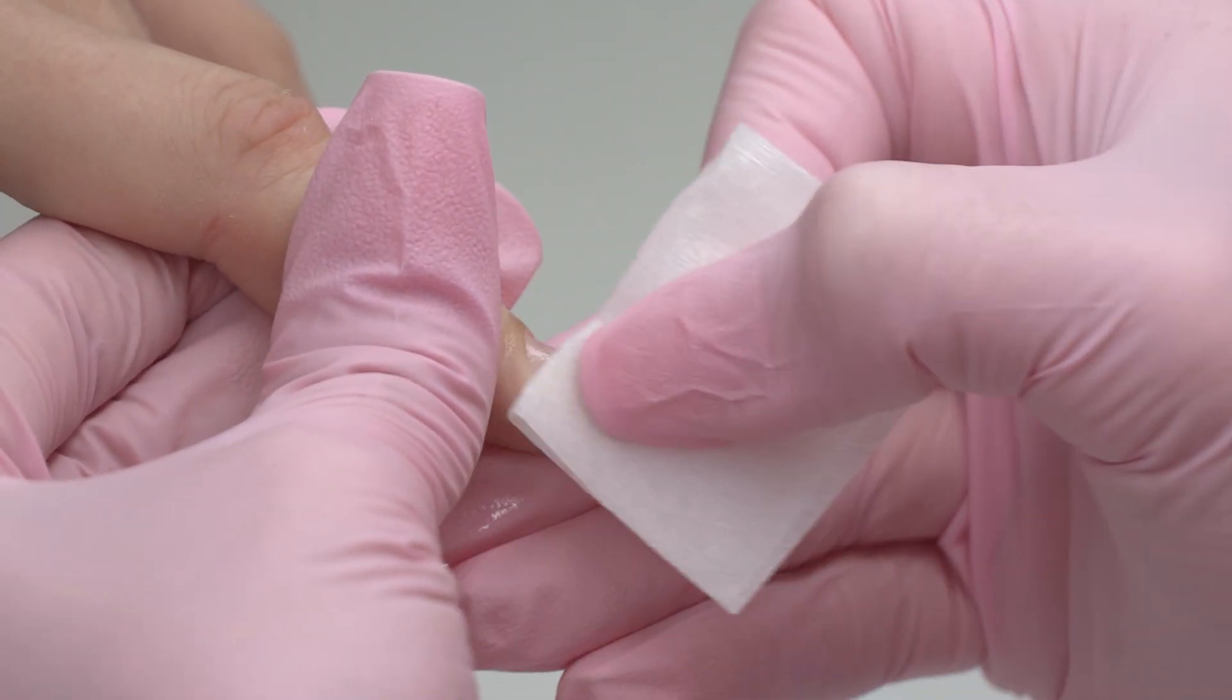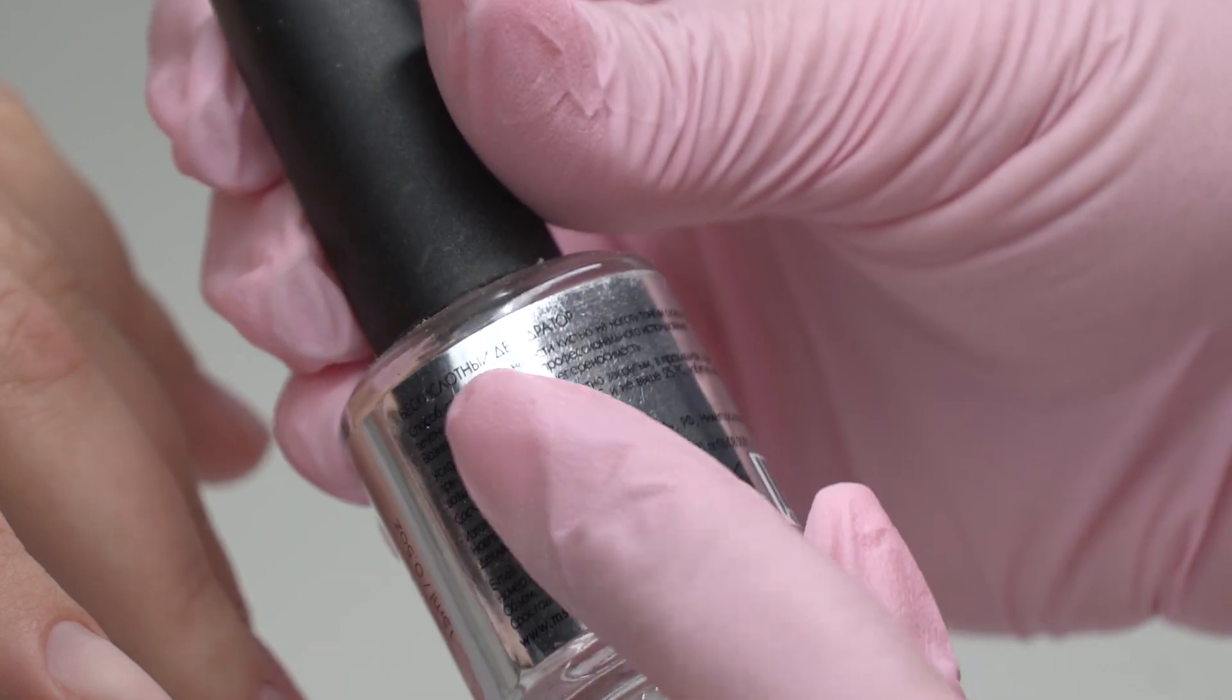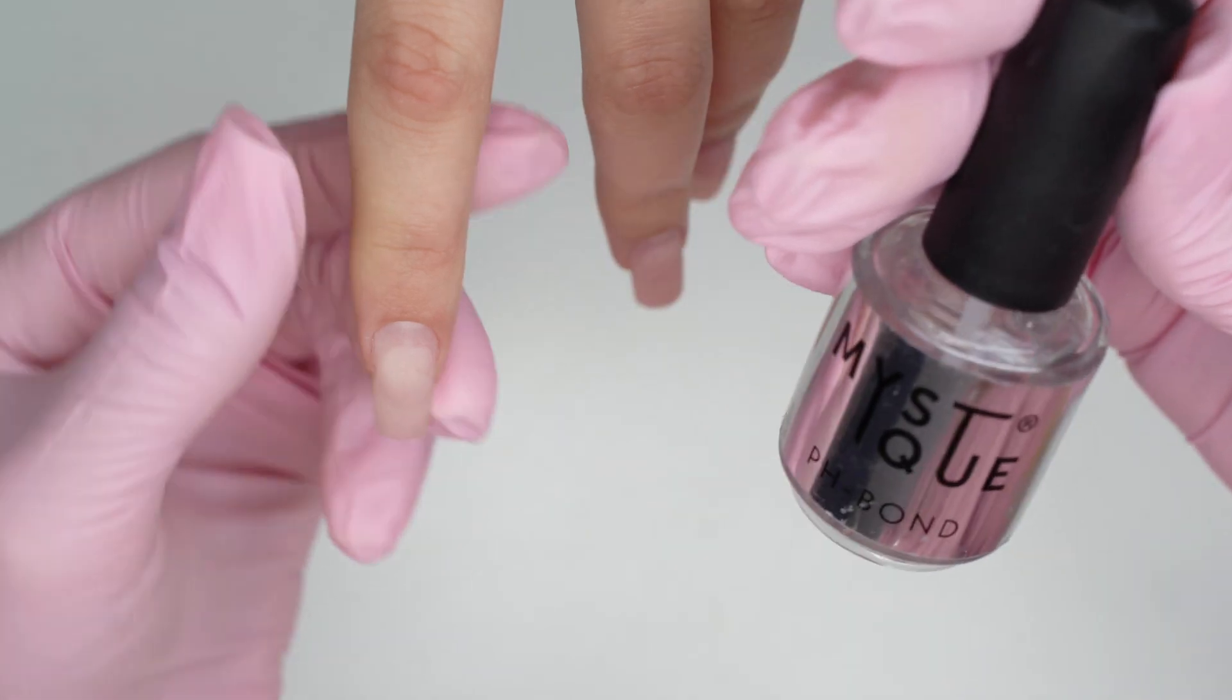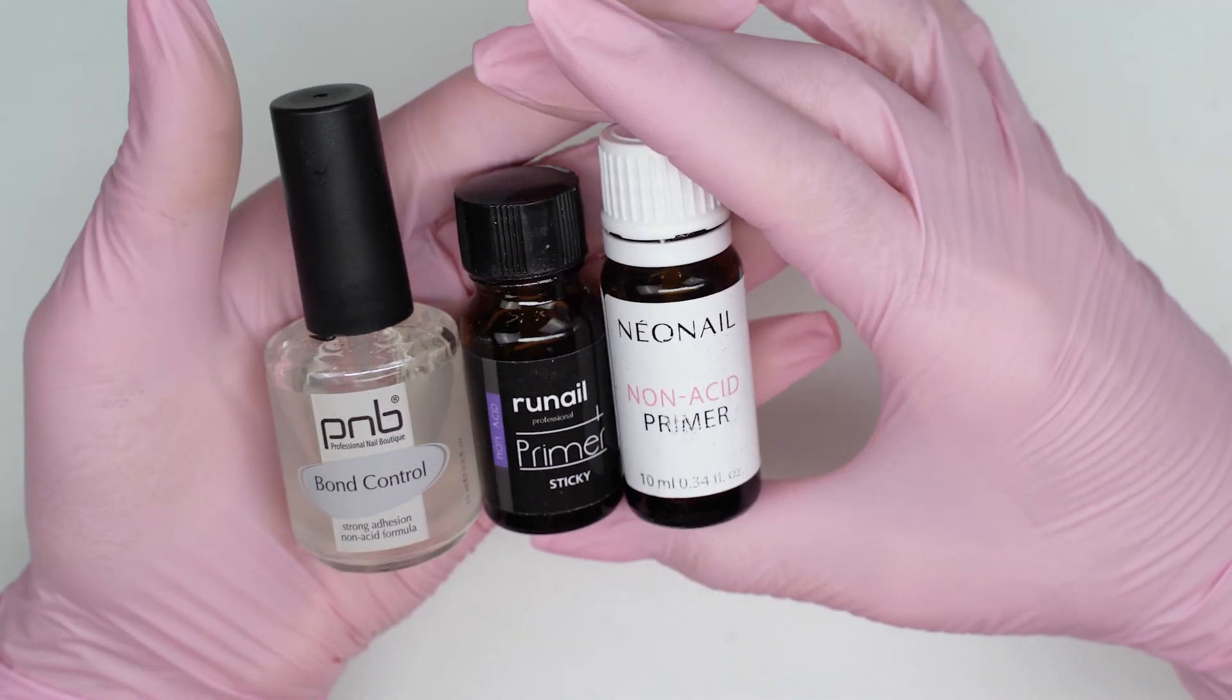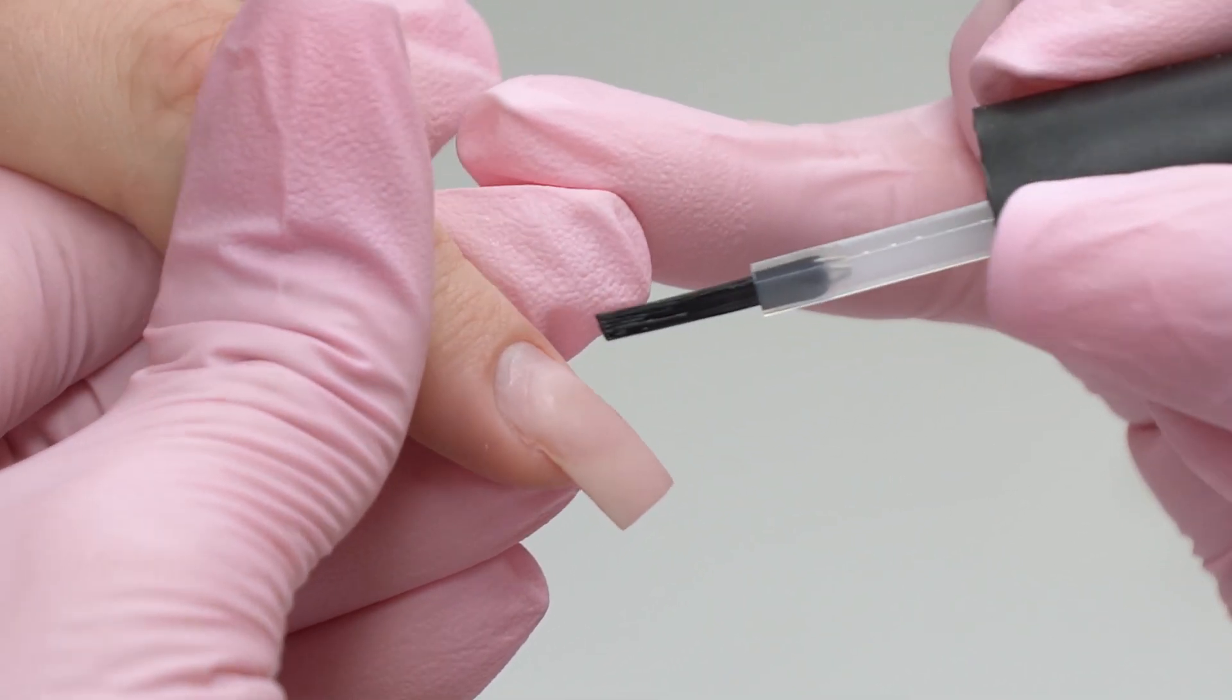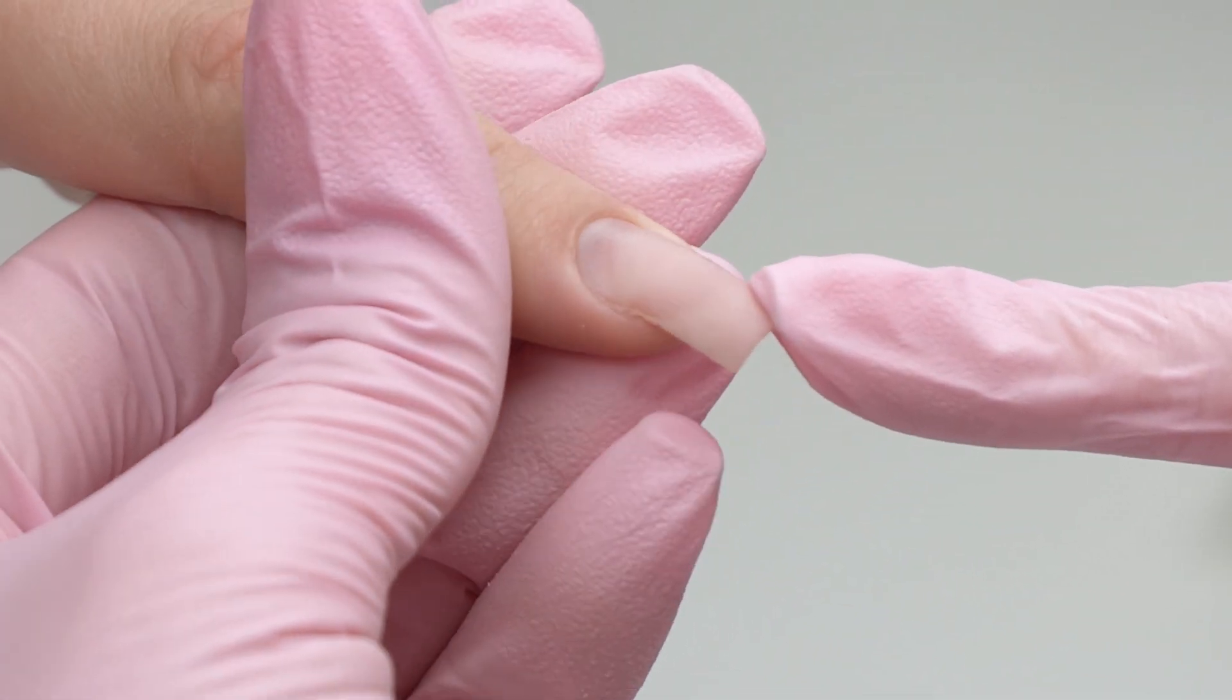Now let's strengthen the nails with gel. If the hands are sweating, I recommend using adhesive products. It can be a pH bond or a dehydrator to dry the nail plate. I will skip this step since this skin is normal. I'm going to use an acid-free primer instead, also known as a double-sided tape. I've got a few options. I choose one of them depending on the mood. We need this product to get some tacky residue left on the nail plate.